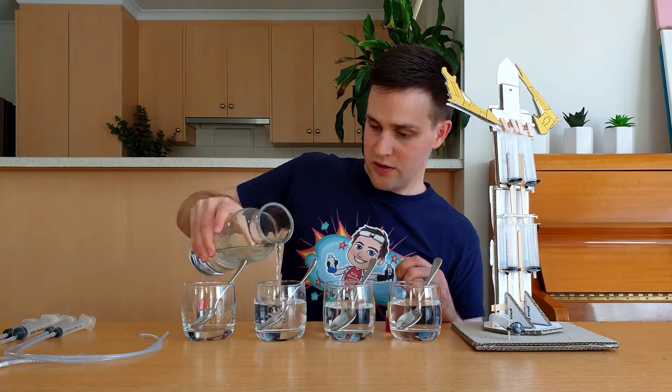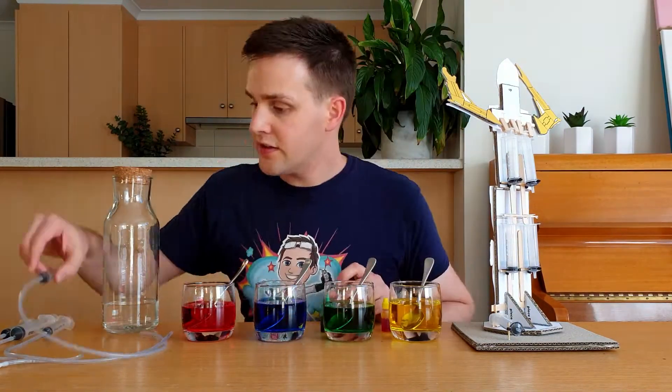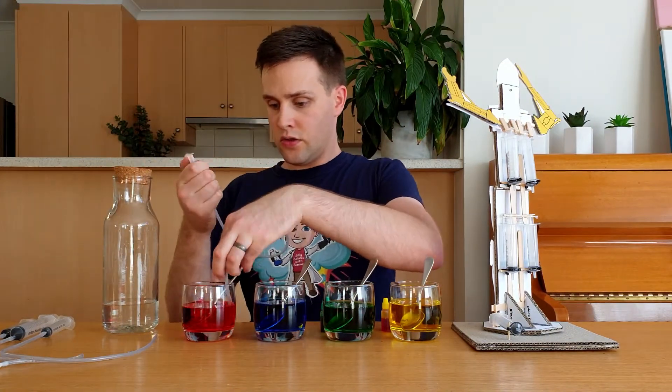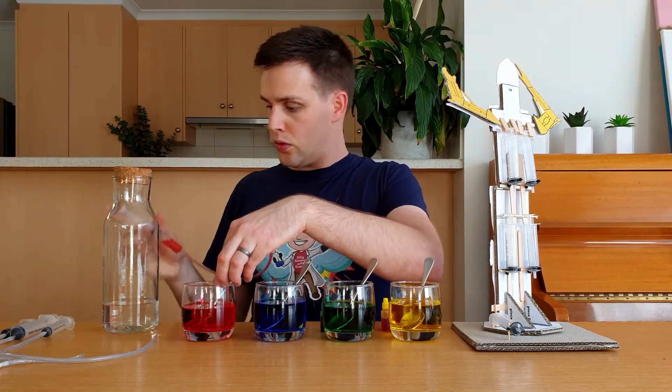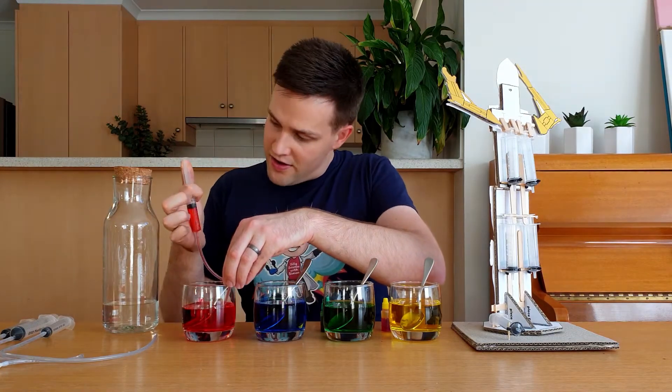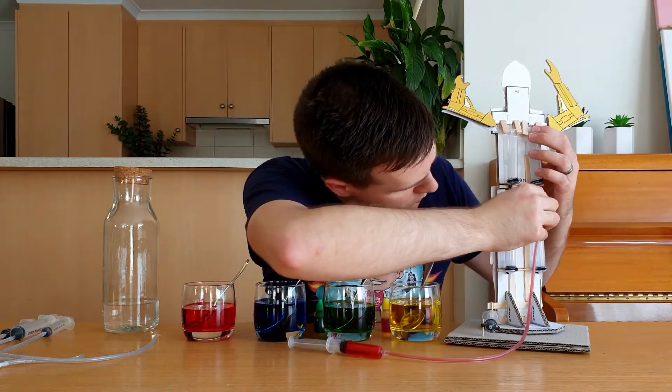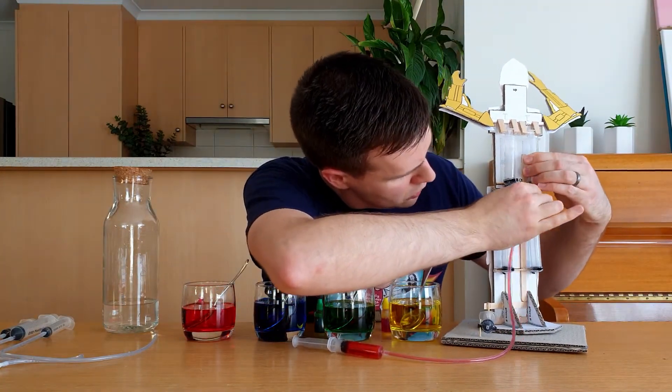Fill 4 cups with water. If you want, you can add 10 drops of food coloring to each cup. Draw up some water into a syringe attached to 50cm of tubing. Turn it upright and squeeze out any air bubbles. Then draw more water into the syringe until it's full. Attach this tube to the syringe that moves the right arm, like this.